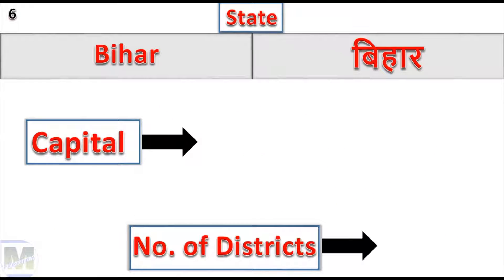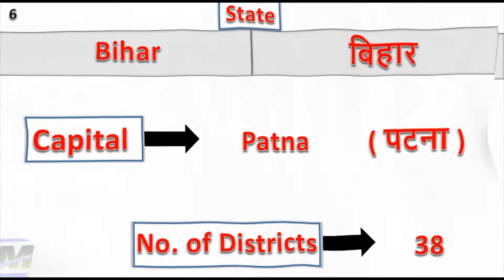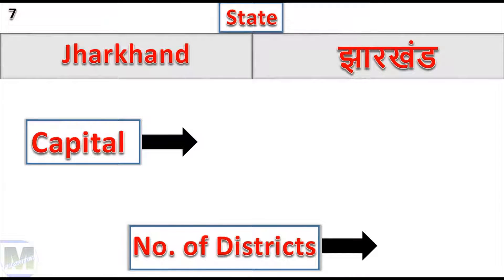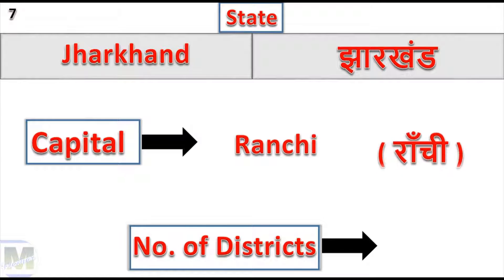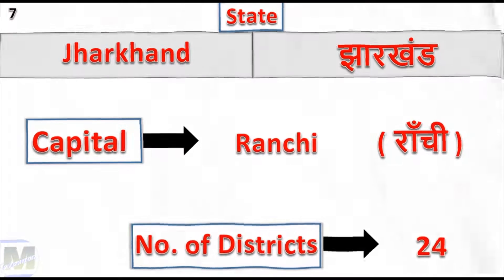Bihar: Capital Patna, Number of Districts: 38. Jharkhand: Capital Ranchi, Number of Districts: 24.